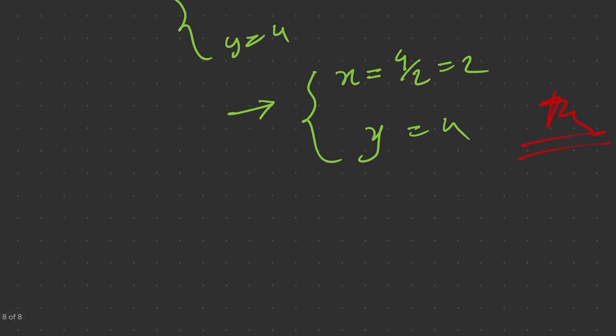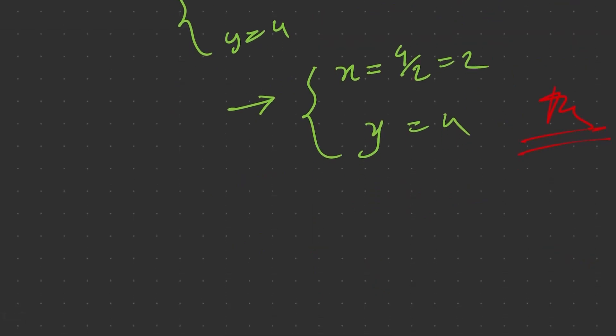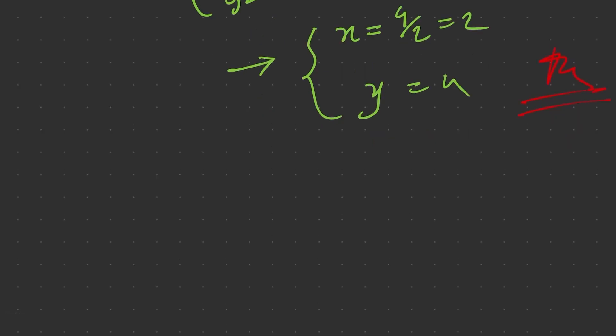Once again, we found x equals 2 and y equals 4 using the elimination method. So dear students, these are the three different methods to solve a system of equations. Remember the system must be linear — first degree — so there will be a distinct solution valid for both equations. Try at home with different linear equations. Thank you for listening and see you in the next tutorial.